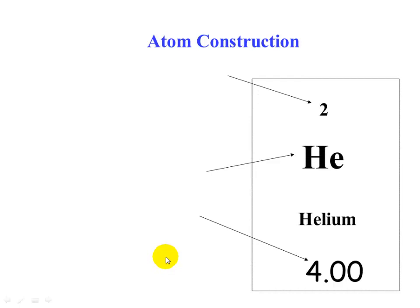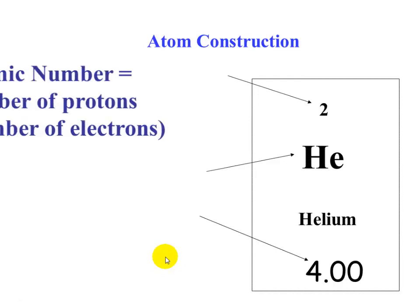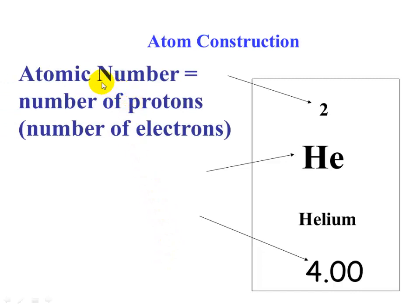The periodic table is organized in order of atomic number. Atomic number is the number of protons in the nucleus. In a neutrally charged atom, we have the same number of electrons as protons, because protons are +1 and electrons are -1.